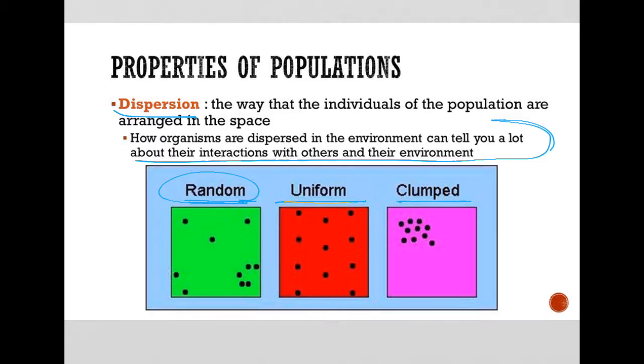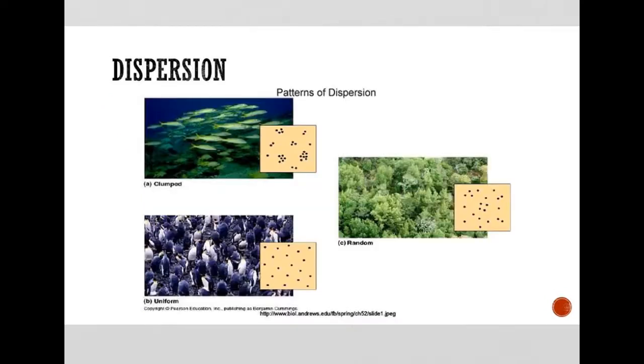A uniform dispersion might tell us that actually organisms want to be as far apart from others as they possibly can. And so this spreading apart, as far apart as possible, leads to sort of a uniform spread. Or clumped organisms might travel in packs or groups or hives or colonies or something like that. So it can tell us a lot how organisms arrange themselves within their environment.